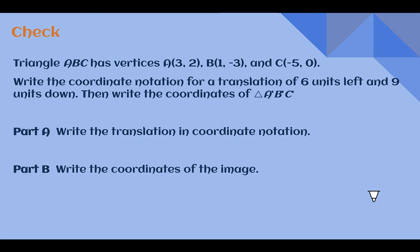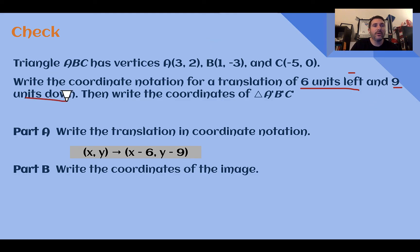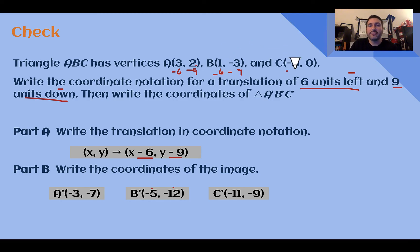Check your understanding: read through the situation and answer both parts. Pause the video now and complete the check. Check your answer. The coordinate notation is x minus 6 and y minus 9, since we're moving six units left and nine units down — both subtractions. A prime: three minus six is negative three, two minus nine is negative seven, so negative three, negative seven. B prime: one minus six is negative five, negative three minus nine is negative twelve. C prime: negative five minus six is negative eleven, zero minus nine is negative nine. We could double-check by graphing to verify everything went six units left and nine units down.